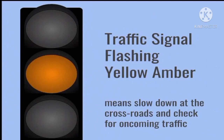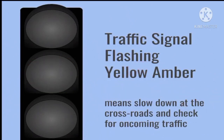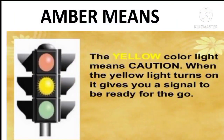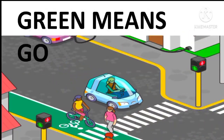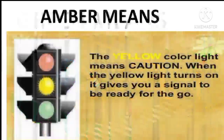Amber means caution. A traffic signal flashing yellow or amber means slow down at the crossroads and check for oncoming traffic. The yellow color light means caution — when the yellow light turns on, it gives you a signal to be ready to go. You may move on if amber appears after you have already crossed the stop line, or when you feel that stopping may cause an accident. Anyhow, be careful.